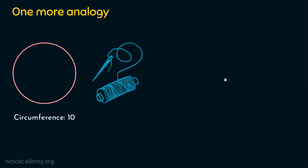Let's take a circle which is of 10 units, and also a thread which is 35 units in length. The circumference of the circle is 10 units and we have 35 units of thread. You can use centimeters or meters according to your wish. Now, what I am going to do with this thread? Suppose I take this thread and wrap it around the circle one time.